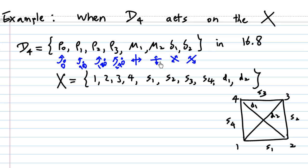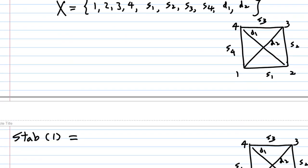Mu1 is a vertical reflection in a line bisecting the square, mu2 is a horizontal reflection in a line bisecting the square, delta1 is a reflection along one diagonal D1, and delta2 is a reflection in the diagonal D2. The set X consists of four vertices 1, 2, 3, 4, four sides S1, S2, S3, S4, and two diagonals D1 and D2.